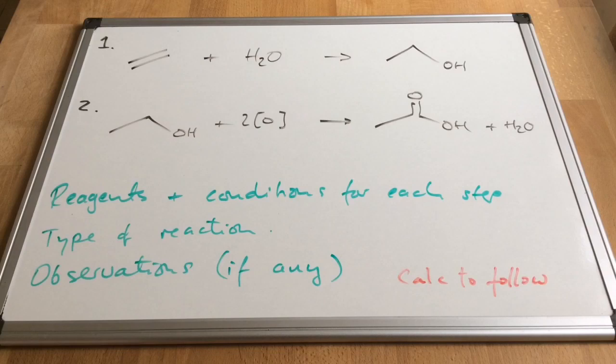So we've got ethene ultimately being converted to ethanoic acid via those two steps. So first of all, reagents and conditions for each step. The answer, the type of reaction and observations if there are any. So have a go, pause the video and then I'll go through the answer.